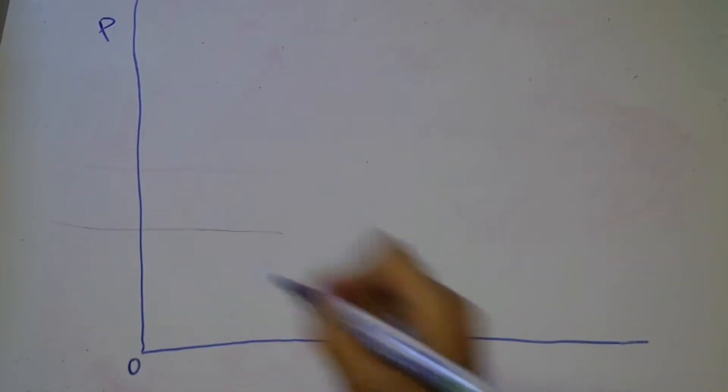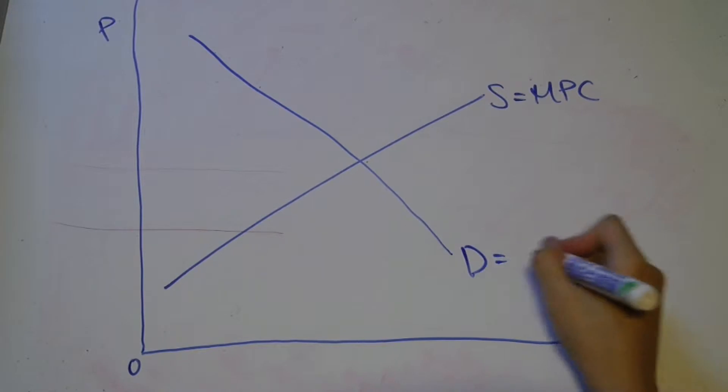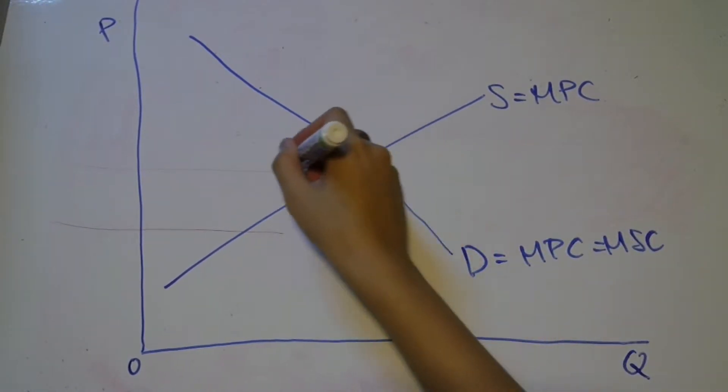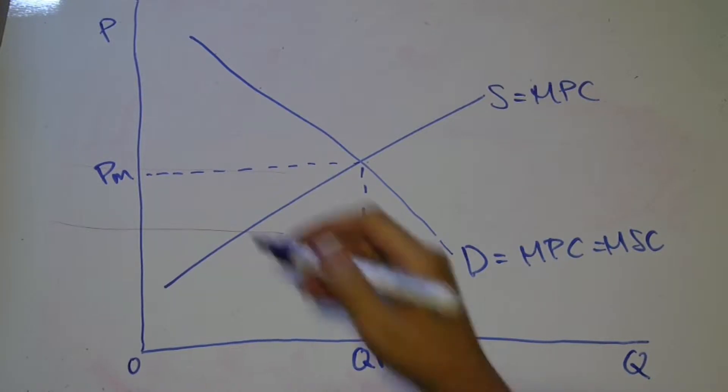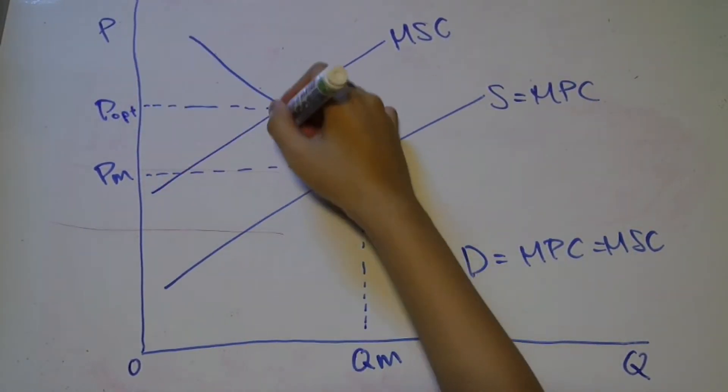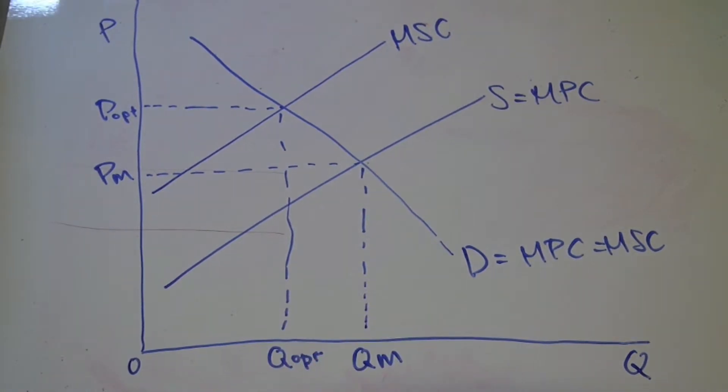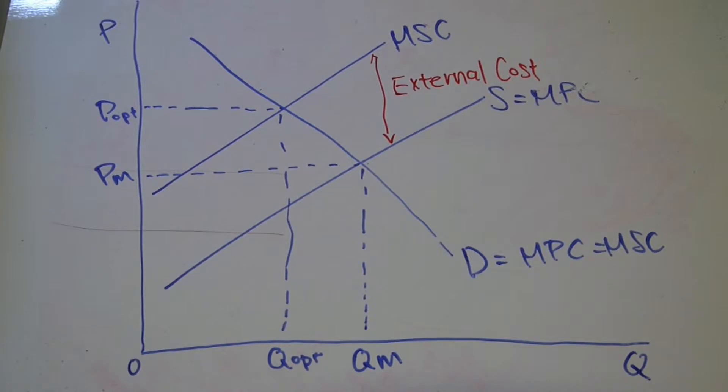Pollution created by firms due to production activities is an example of negative production externality or external costs created by producers. When you emit carbon dioxide into the atmosphere you are polluting the environment. This is a production externality because over the firm's private cost of production there are additional costs that spill over onto the society.